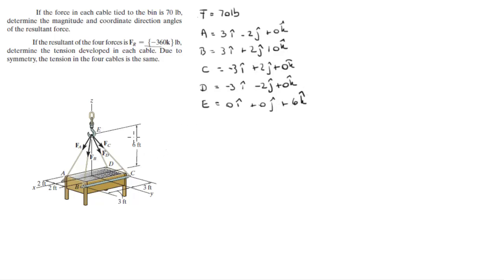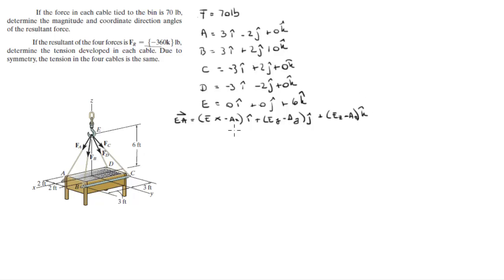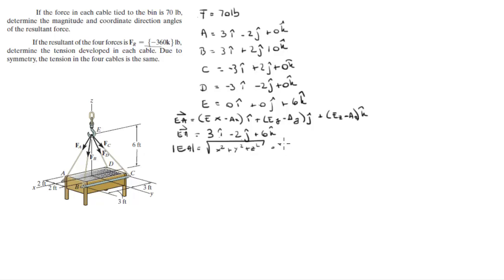Now that we have all these points, let's work with vector EA, and by figuring this one out we'll figure them all out. EA equals (Ex − Ax)i + (Ey − Ay)j + (Ez − Az)k. Substituting the values gives EA = 3i − 2j + 6k. We find the magnitude by taking the square root of 3² + 2² + 6², which gives a magnitude of 7.